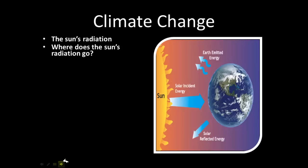Climate change. When we talk about climate change, it goes back to the sun, like everything else. When we discuss the Earth's climate and the seasons, all those things relate to the Earth's relationship with the sun. The same thing applies to climate change.